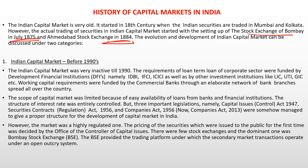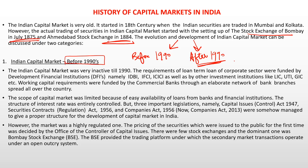The Indian capital market revolution has been categorized into two phases based on time: before 1990 and after 1990. Before 1990, the Indian capital market was very inactive. For long-term loan requirements, corporates were given long-term loans by development financial institutions like IDBI, IFCI, and ICICI.